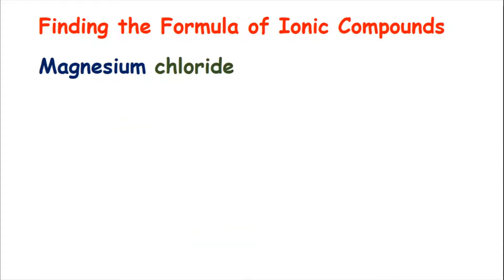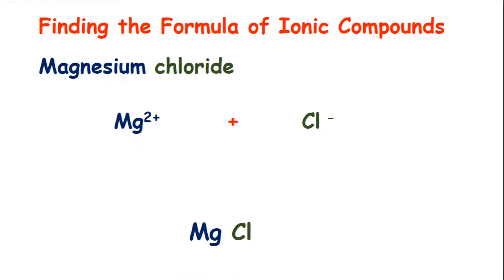We're going to look at another example: magnesium chloride. Again, we write the ions and the charges. The magnesium ion is Mg2+. We leave a bit of space, put a plus, and then the chloride ion is Cl-. Again, we leave some space and put Mg and Cl, leaving a little bit of space for the number later if we need it.